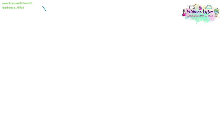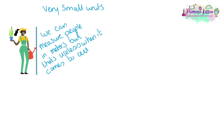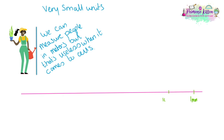In biology we work with very small units, so it is important that you understand the relationship between these and how to convert between them. Starting at the big end with one millimeter — a grain of sand is roughly one millimeter in diameter. Getting smaller: 100 micrometers, 10 micrometers, 1 micrometer, 100 nanometers, 10 nanometers, 2 nanometers, 1 nanometer. A grain of pollen is roughly 100 micrometers. At 10 micrometers we're looking at a red blood cell. Bacteria are roughly 1 micrometer, whereas viruses are much smaller at around 100 nanometers.